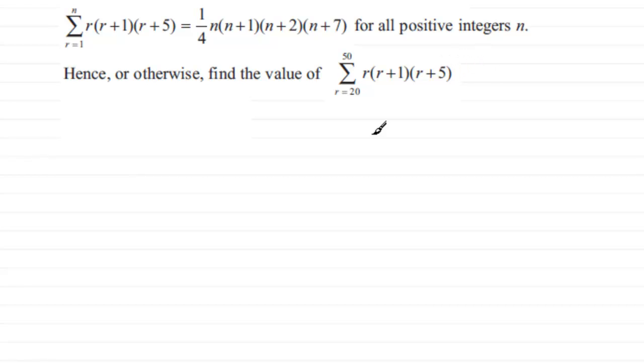To do something like this is fairly straightforward. All we've got to do is just copy out the question here. We're trying to sum from r going from 20 to 50 of r multiplied by r plus 1 times r plus 5.